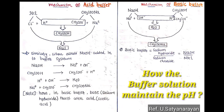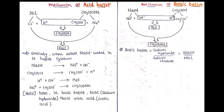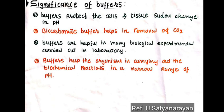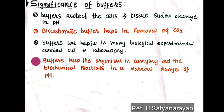After understanding the mechanism, we completely understand how buffer solution maintains the pH. Now last, we are talking about the significance of buffers. First, buffers protect the cells and tissue from sudden change in pH. Second, bicarbonate buffer helps in the removal of CO2. Third, buffers are helpful in many biological experiments carried out in a laboratory. Fourth, buffers help the organism in carrying out biochemical reactions in a narrow range of pH.